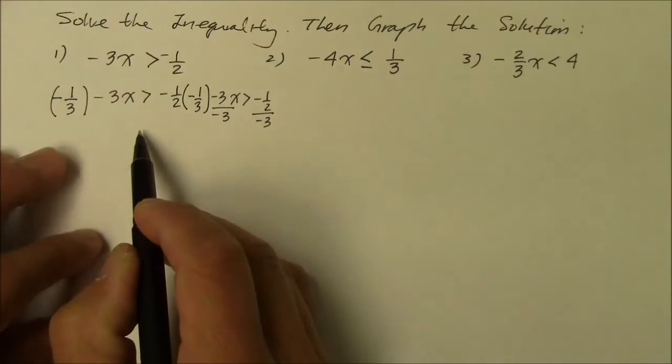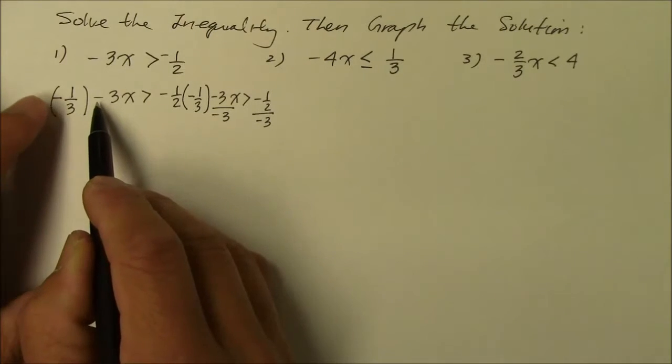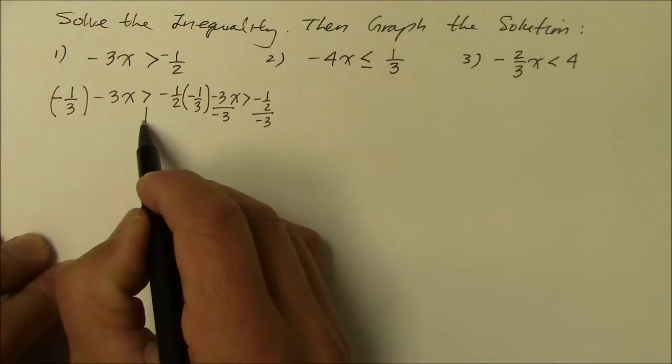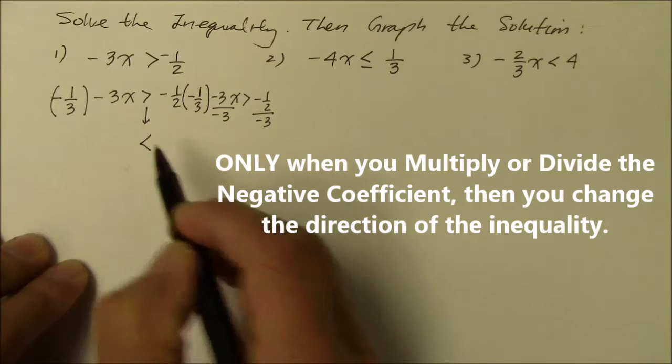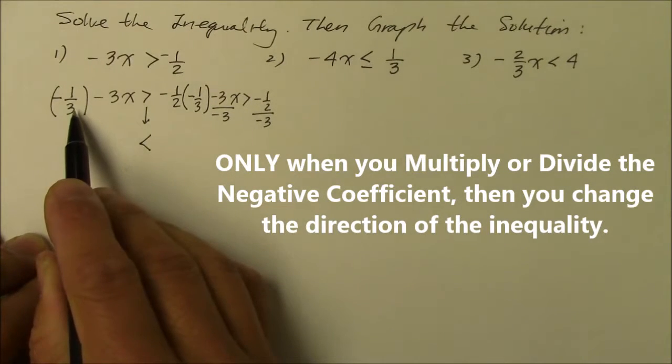And now here's the tricky part of it. Any time you multiply or divide a negative coefficient, any time you multiply or divide, not add or subtract, multiply or divide a negative, the direction of the inequality must change. This is only when you multiply or divide a negative. Okay?